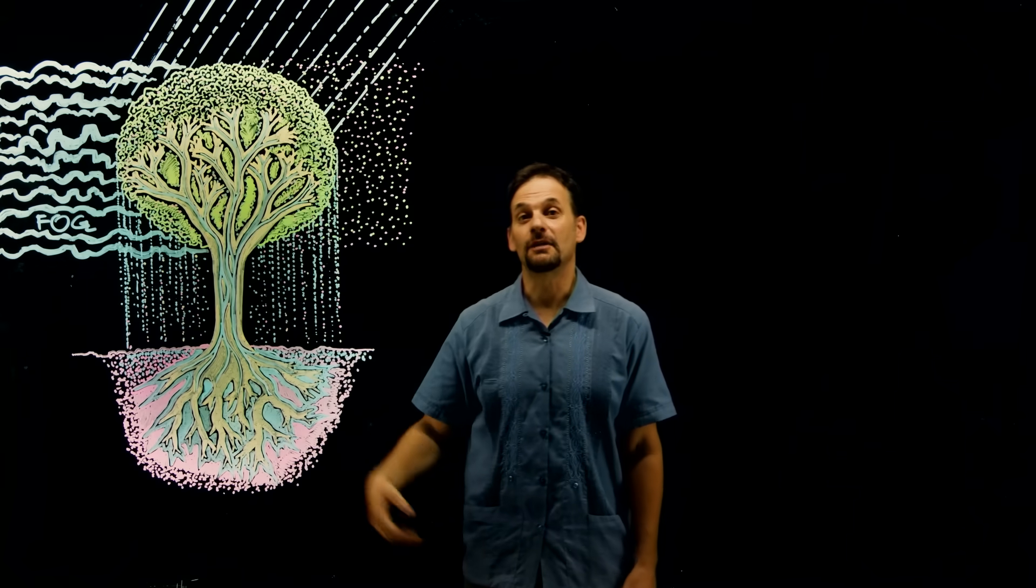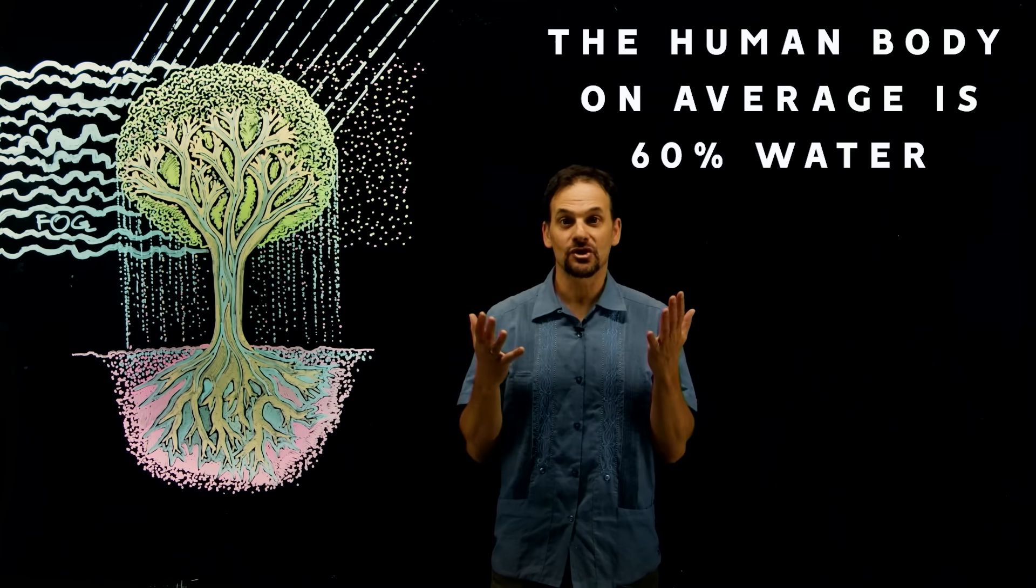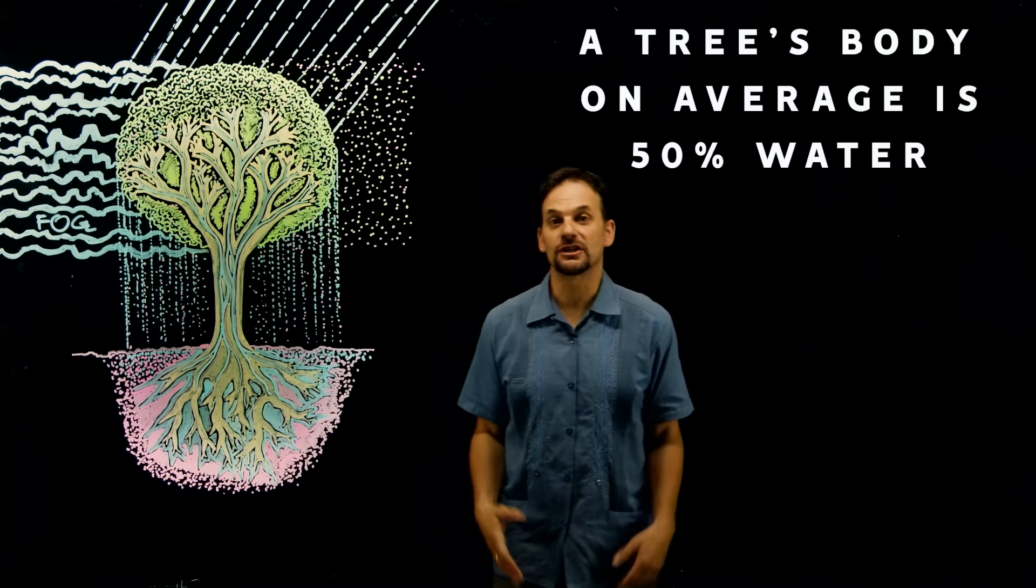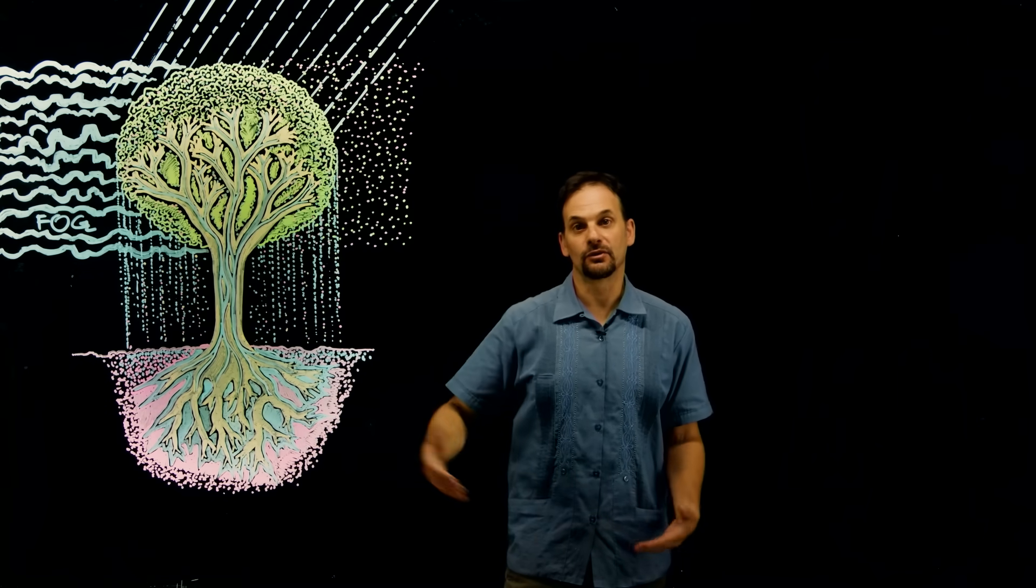So the water soaks through the soil sponge and is drunk up by the tree's roots. The tree becomes full of water. Just like the human body on average is 60% water, the body of a tree on average is 50% water, both above and below ground in the root system.